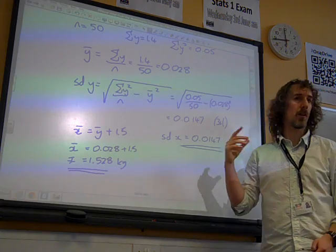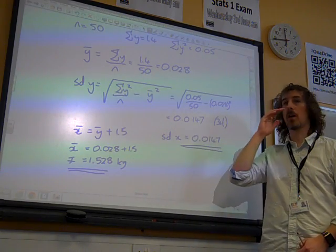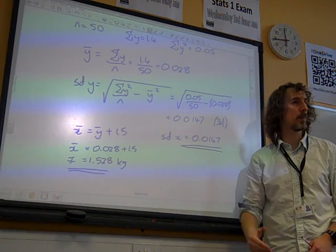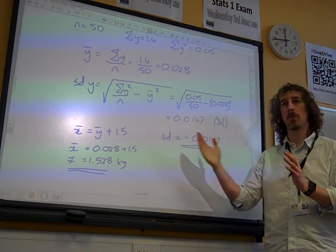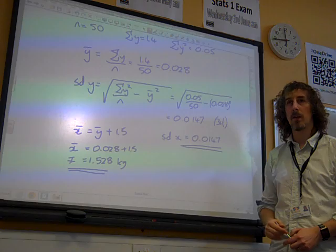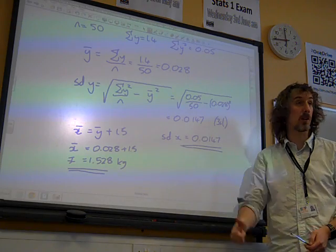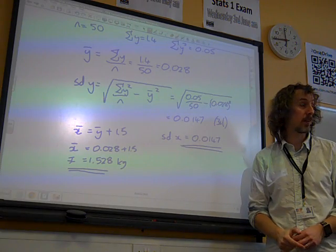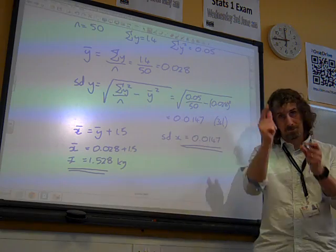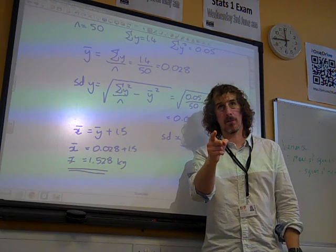We'd only have to adjust that if as part of our coding we had multiplied or divided by anything. That would have altered the spread, not adding or subtracting. There we go. That's pretty cool, six marks, isn't it? I think that's all right. You can get that. And that's maths.